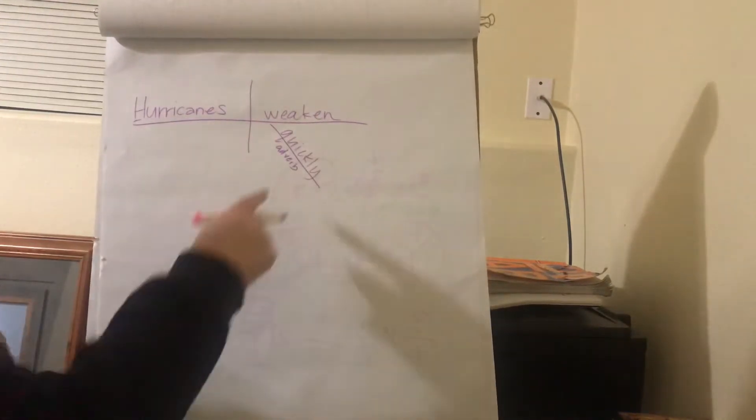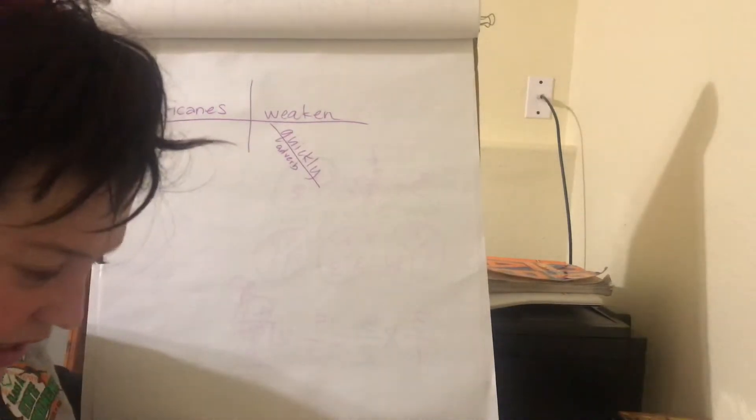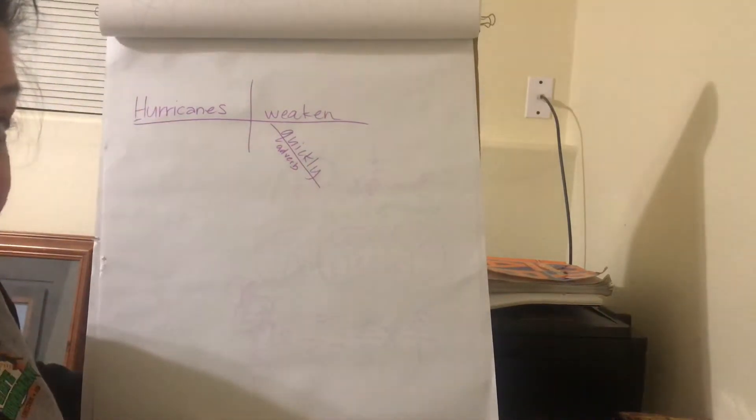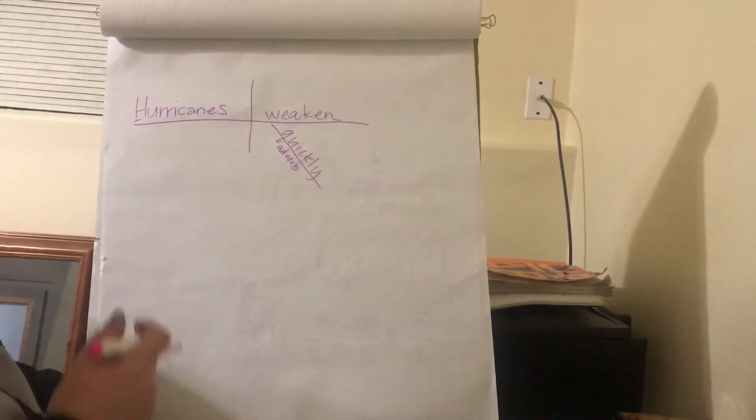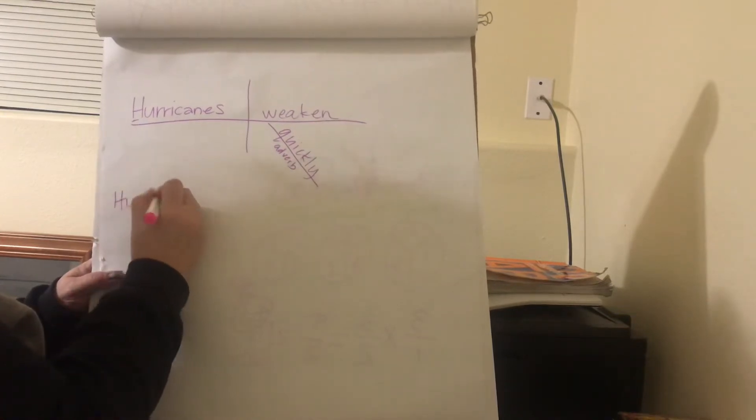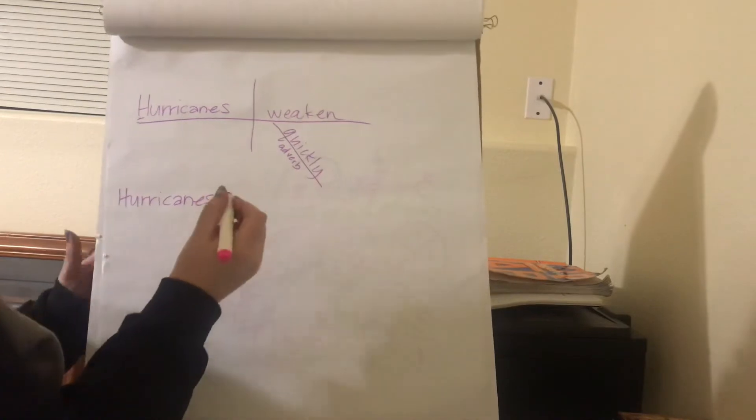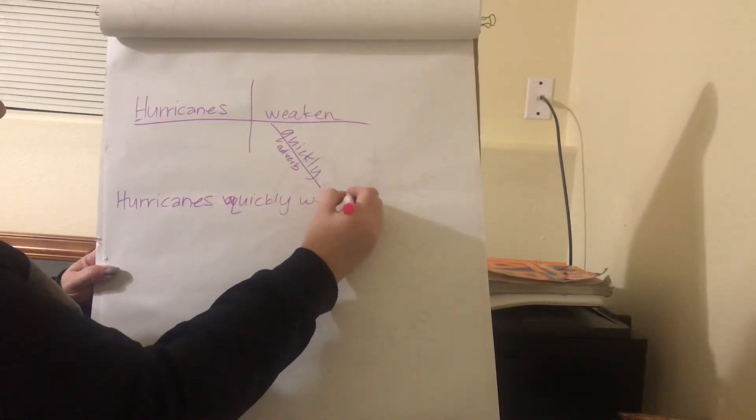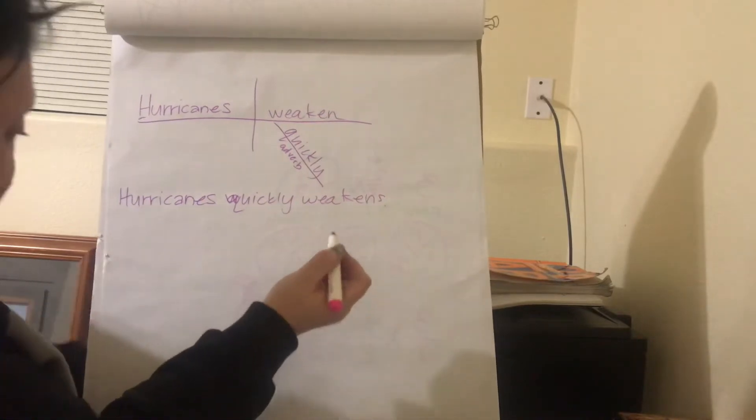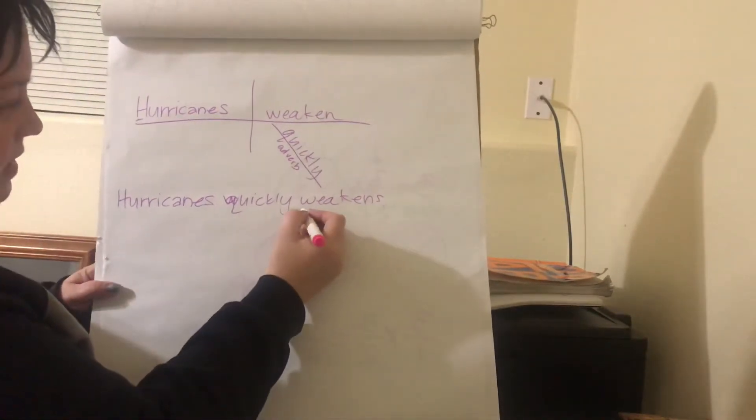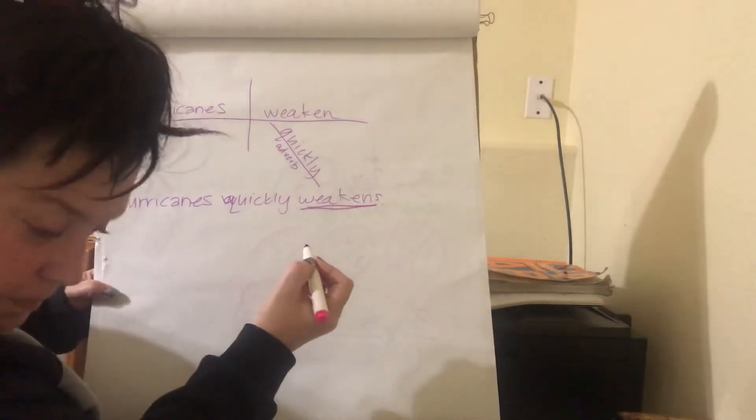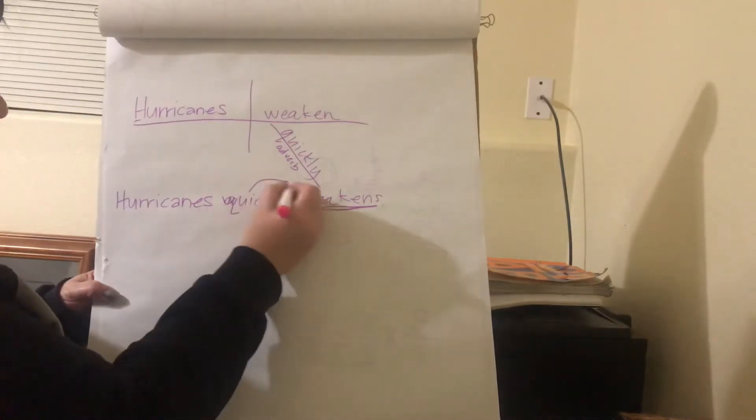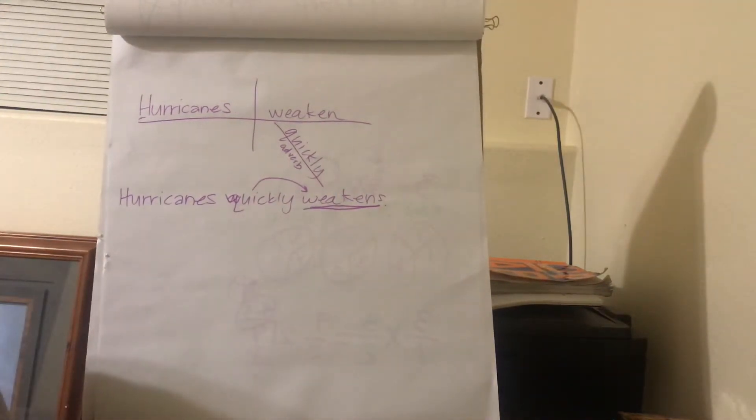When we see our sentence, they want us to underline our adverb and point it towards our verb. So in this sentence, leaving out the prepositional phrase, quickly weakens. So what they want us to do is underline our verb, right? They do it two different ways, those silly people. And then quickly is going to show - I think in the assignment they want us to do it the other way around, so I'll do it that way then.